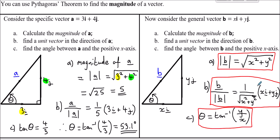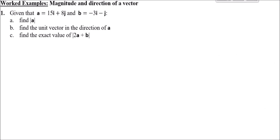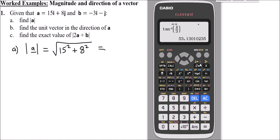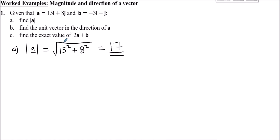These general results are worth trying to remember. If you can't remember them, apply them time and time again until they become second nature. They're important results which we're going to use now in some worked examples. We're told that a is 15i plus 8j and b is minus 3i minus j. First, part a: find the magnitude of a, which is the square root of 15 squared plus 8 squared. Using the calculator, this gives 17.